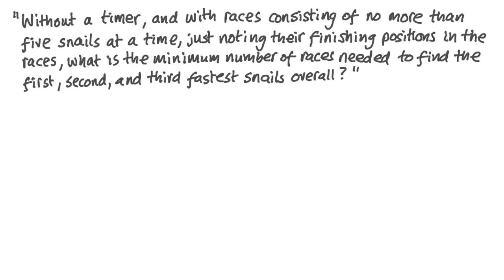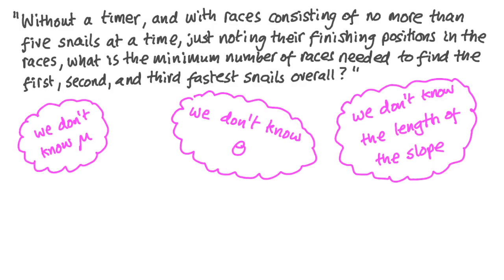Without a timer, and with races consisting of no more than five snails at a time, just noting their finishing positions in the races, what is the minimum number of races needed to find the first, second, and third fastest snails overall? We don't know the value of μ for any of the snails. We don't know the angle of the slope, and we don't know the length of the slope. So I don't want you to use any of the maths I've just been talking about in order to answer this problem. Just a bit of logic. So, pause the video now, have a go at the problem, and then watch through our solution.